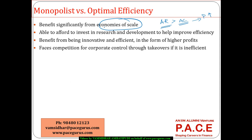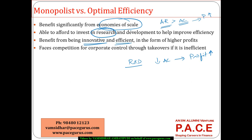The monopolist has the resources and the capital to make a lot of R&D-based investments, improve the process, improve efficiency, reduce the average costs, and increase profit. That's one more reason why a monopolist should look for efficiency. They can become more and more innovative and efficient, and all of that drives profits.